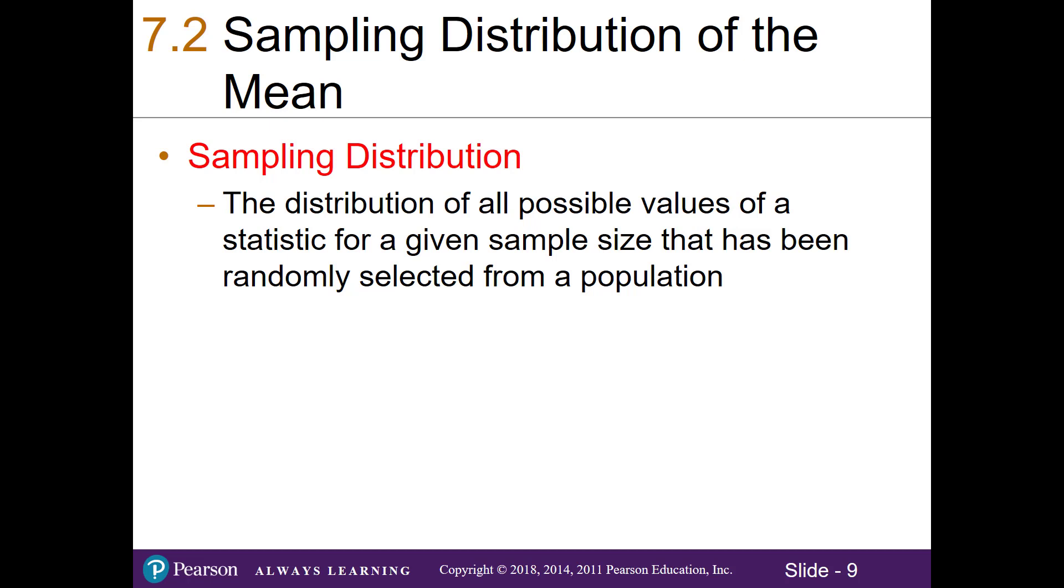In other words, if we took all of the possible random samples of a particular size and calculated the sample mean for each one, and then graphed it in a histogram, we would get a sampling distribution.